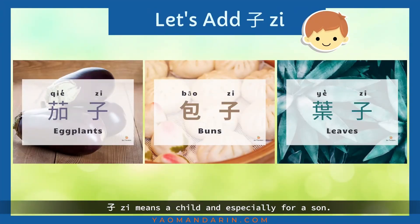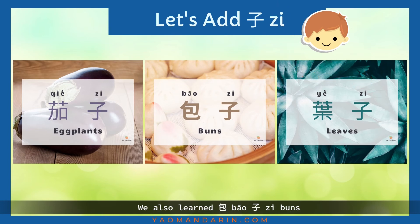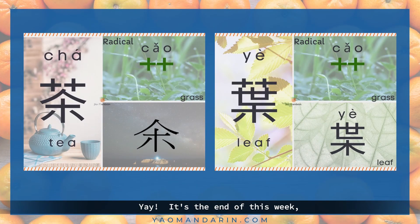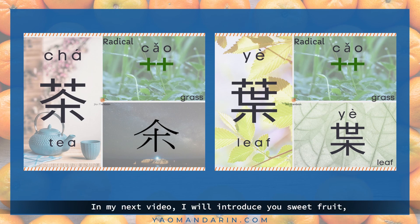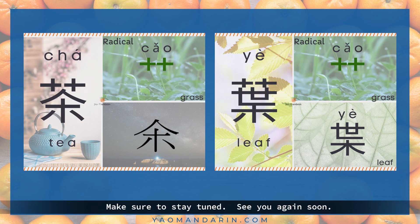子 means a child, and especially a son. When we want to say leaves in Chinese we say 葉子. We also learned 包子, 茄子 (eggplants) before. It's the end of this week and I'm happy we learned new characters and reviewed the old ones together. Let's check them again: 茶 and 葉. In my next video I'll introduce you to sweet fruit and the radical is also 草 — grass. Make sure to stay tuned, see you again soon, bye bye!